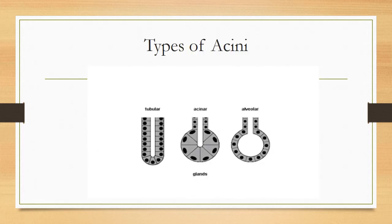The parenchyma or secretory unit of the gland can take different shapes. If it is tube-like, it is called a tubular gland. If it is acinar-shaped, it is an acinar gland. If it is alveolar-shaped, it is an alveolar gland. So a gland with a tubular secretory portion and a single non-branching duct is a simple tubular gland; if the duct branches, it becomes a compound tubular gland.